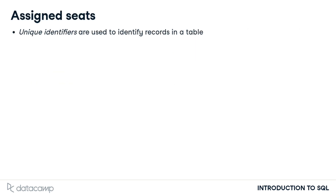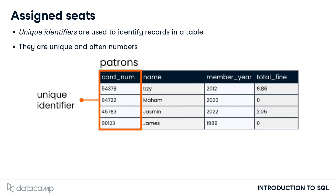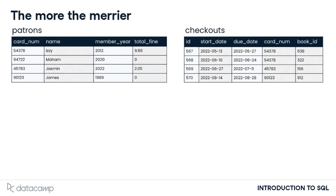A unique identifier, sometimes called a key, is just what it sounds like: a unique value which identifies a record so that it can be distinguished from other records in the same table. This value is very often a number. In the patrons table, it makes sense to use the cardnum field as the unique identifier for each patron, not the name field, because it's possible that as our little library grows, two patrons might have the same name.